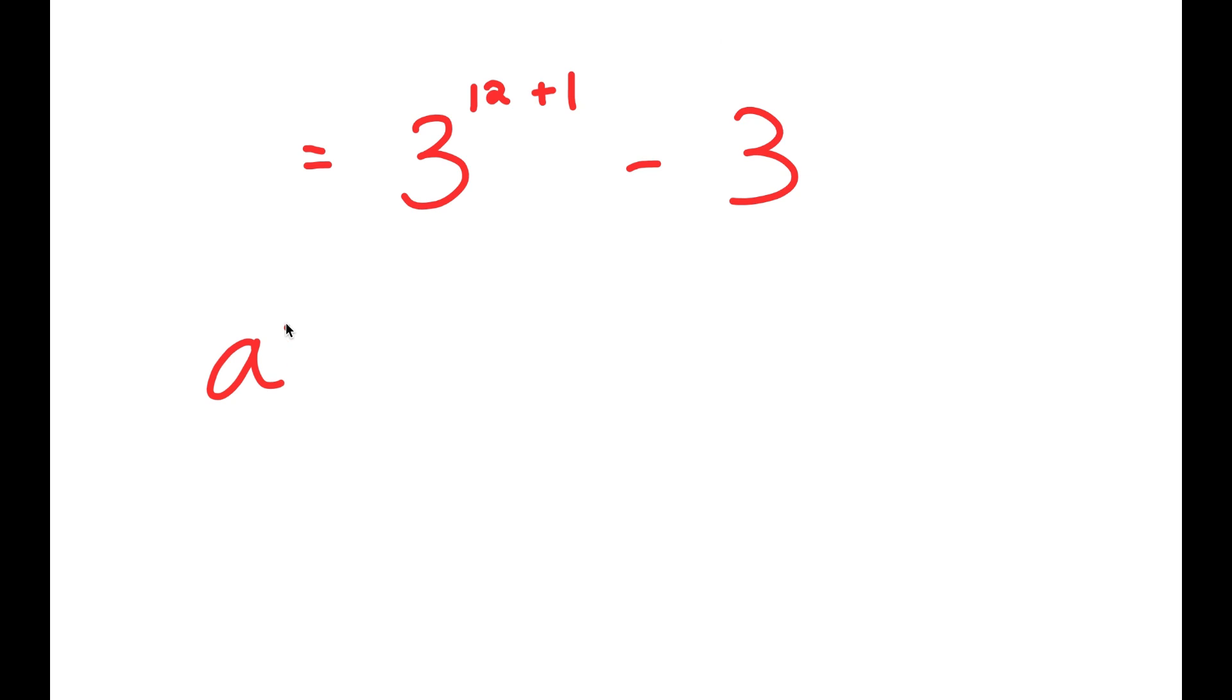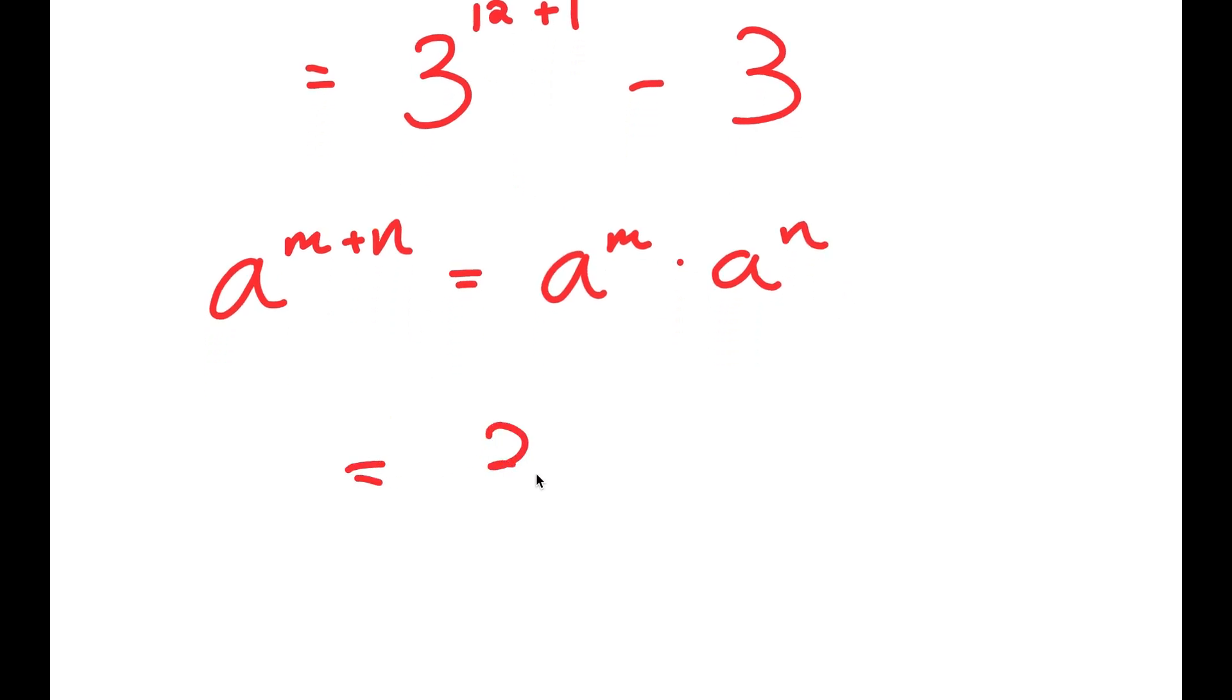Now if I have something in the form a to the power of m plus n, this is equal to a to the power of m times a to the power of n. So I get 3 to the power of 12 times 3 to the power of 1 minus 3.